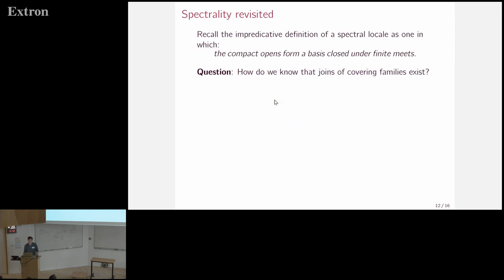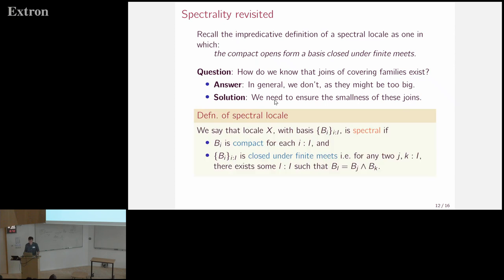So recall the impredicative definition of a spectral locale I gave as one in which the compact opens form a basis closed under finite meets. So if we tried to write this down in a predicative setting, how would we know that the joins of covering families existed? Well, we wouldn't, because they might not exist in general. So we need to make sure that these joins are small. I mean, they can be defined. So we use this following definition of spectrality. We say given some locale X with a basis, it's spectral if everything in the basis is compact and the basis is closed under finite meets. And we use exactly the same idea for stones, for bases consisting of clopens.